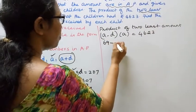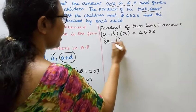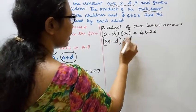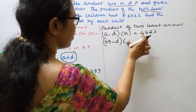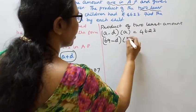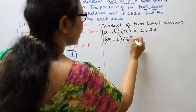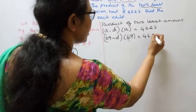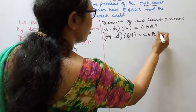Since the sum gives a = 69, substituting: (69 minus d) into 69 equals 4,623.